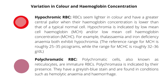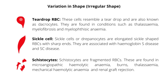Polychromatic cells, also known as reticulocytes, are immature red blood cells. Polychromasia is indicated by their presence. They have a grayish-blue stain and are found in conditions such as hemolytic anemia and hemorrhage. Unlike normal red blood cells, the shape or outline of abnormal red cells can be irregular.